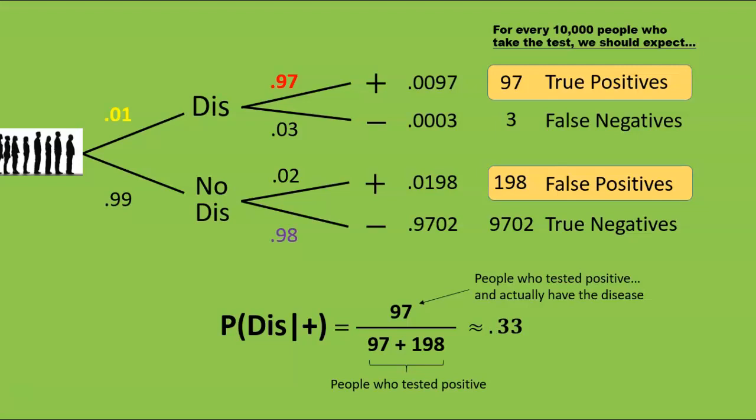Probability, as this example shows, can be highly counterintuitive. Here we had a test that sounded remarkably accurate. 97 and 98% chances of giving the correct results to people with and without the disease. And yet we found that only 1 in 3 people who test positive actually have the disease. How on earth did that happen?